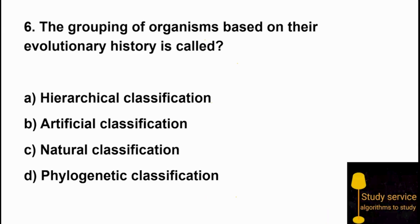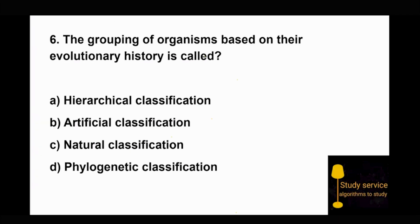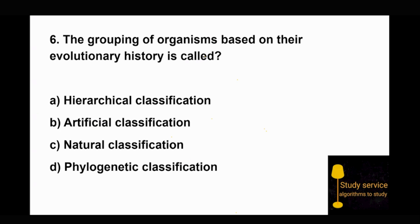Question 6: The grouping of organisms based on their evolutionary history is called. Option A: artificial classification. Option B: natural classification. Option D: phylogenetic classification. Since 'phylogenetic' relates to evolutionary history, the right answer is Option D — phylogenetic classification.